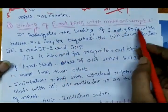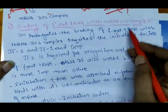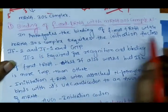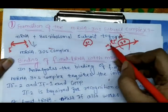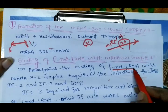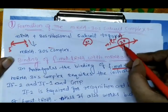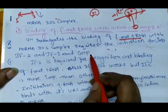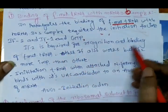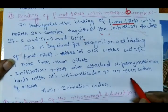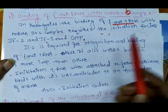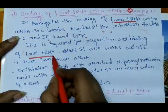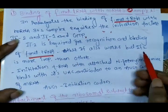In prokaryotes, the binding of formyl-methionine tRNA to the mRNA–30S complex requires initiation factors IF2, IF1, and GTP. After the mRNA–30S complex is formed, the formyl-methionine tRNA gets attached. IF2 is required for recognition and binding of the formyl-methionine tRNA to the complex. IF2 is more important than the other initiation factors for this step.